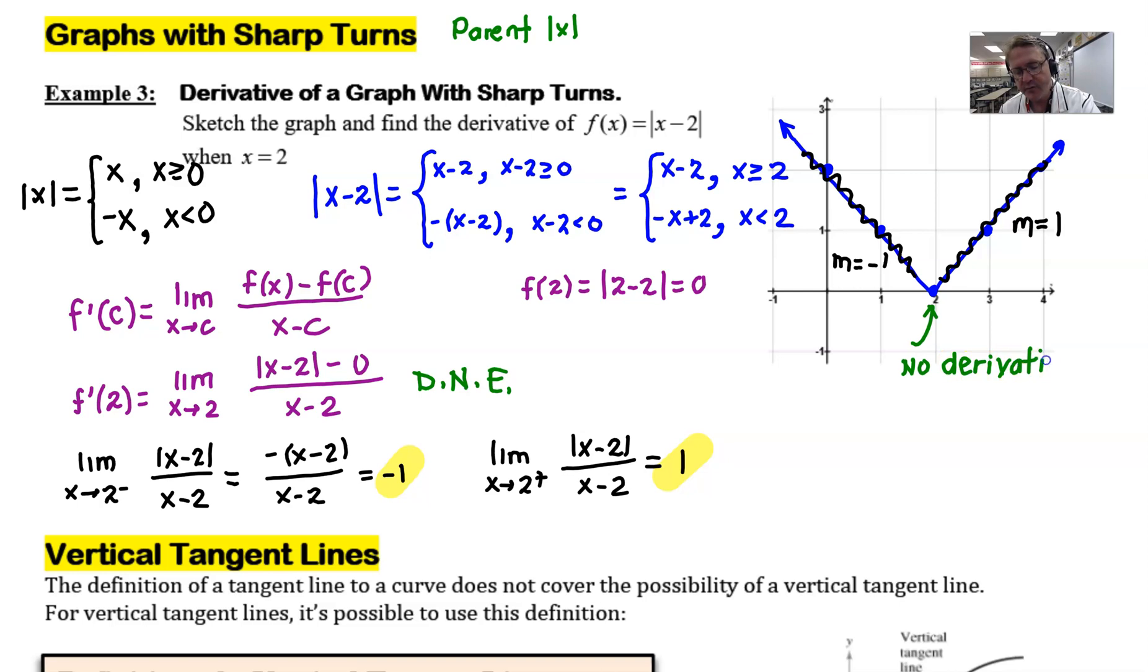Now as we move through the course, what we're going to find out is that if you have a graph that has a very sharp turn like this, and then we're going to have to define what does a very sharp turn look like, but if we see that we're going to go ahead and operate under the assumption that the derivative does not exist. We'll talk more and more about what does it mean to be that very sharp turn in the days to come.